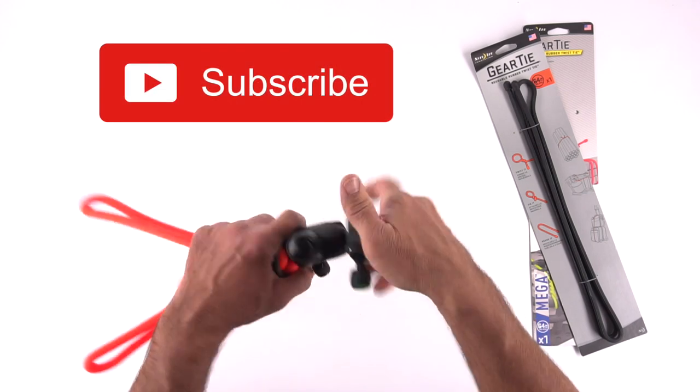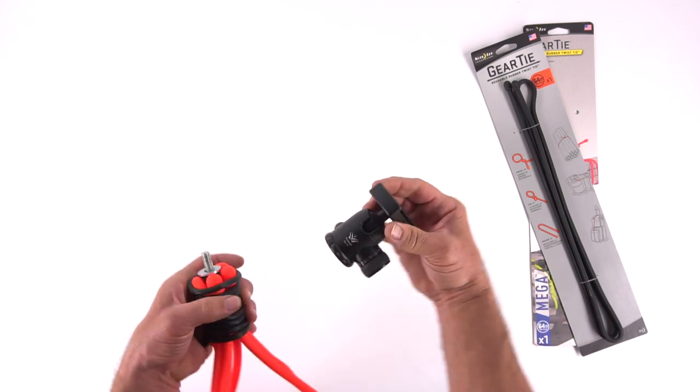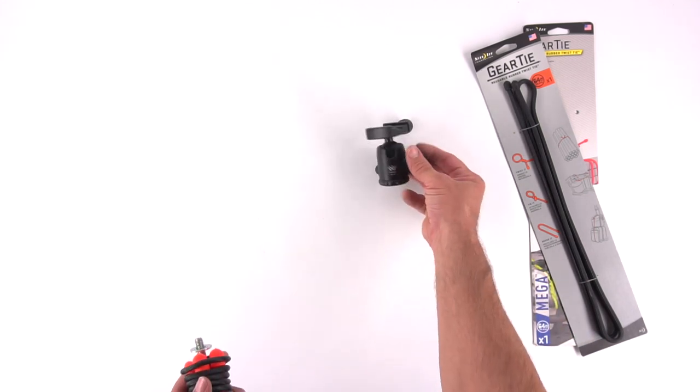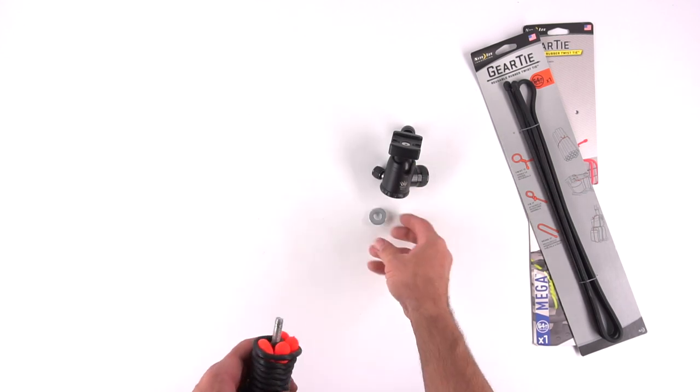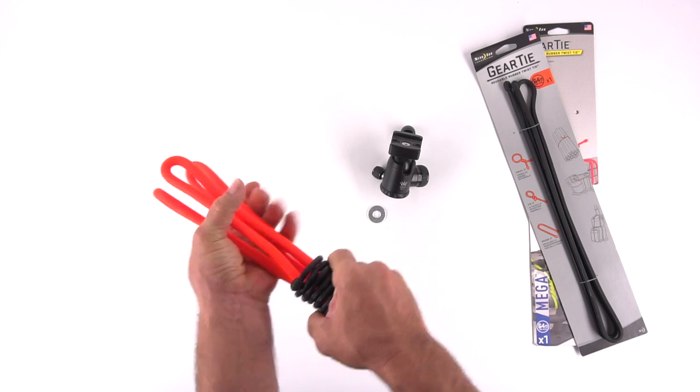If you're new to the channel, consider subscribing if you like stuff like this. This is an inexpensive smaller ball head. It has an Arca Swiss compatible quick release mounted on it. And they're about $25 to $30 US.